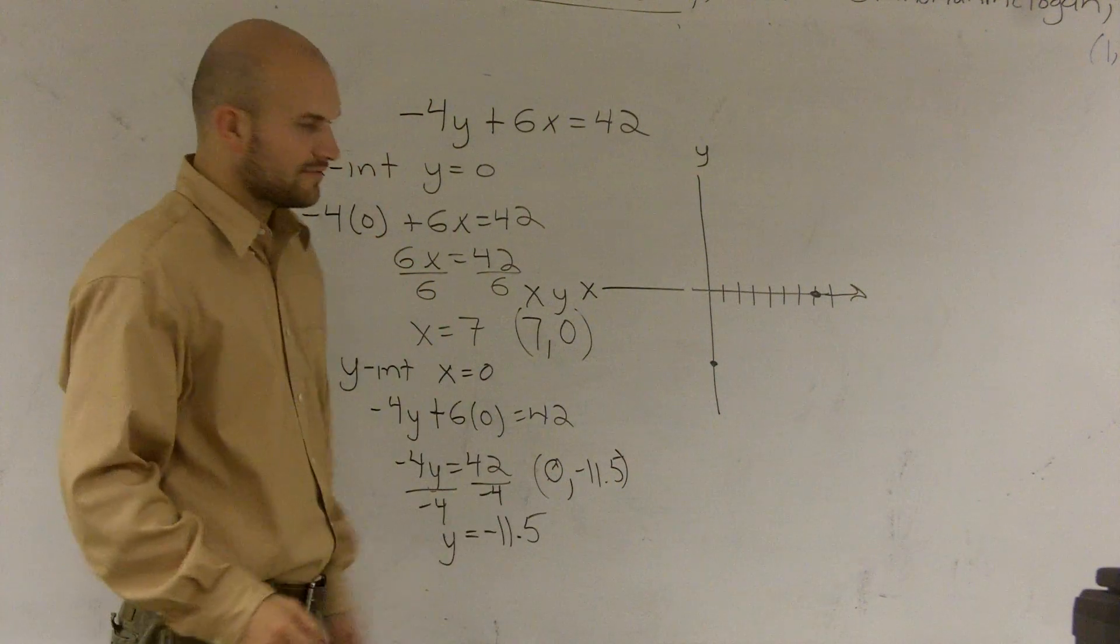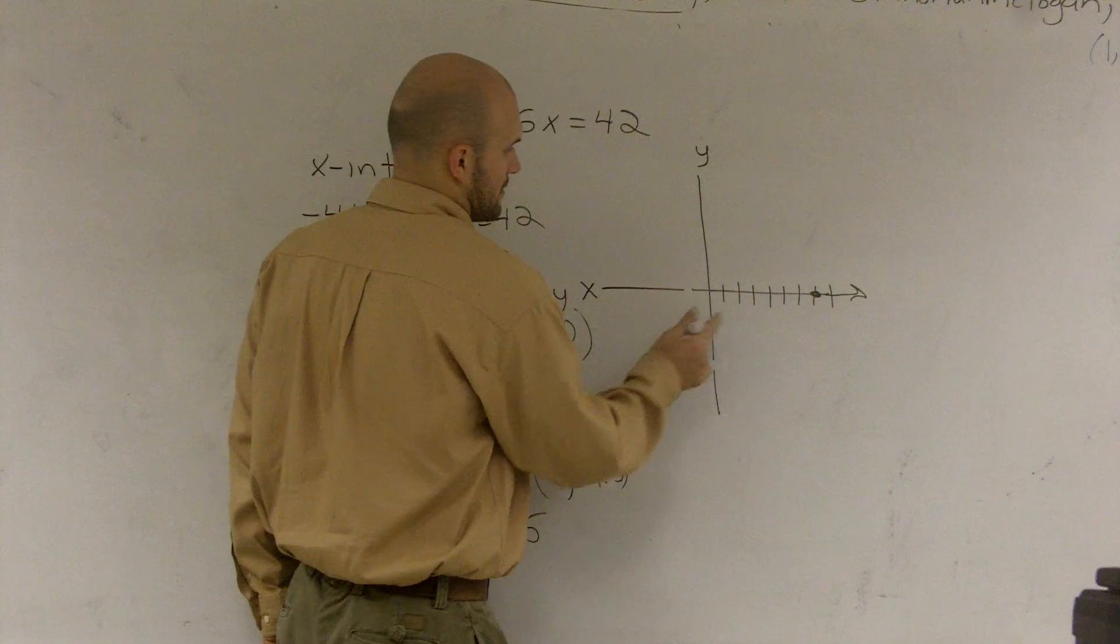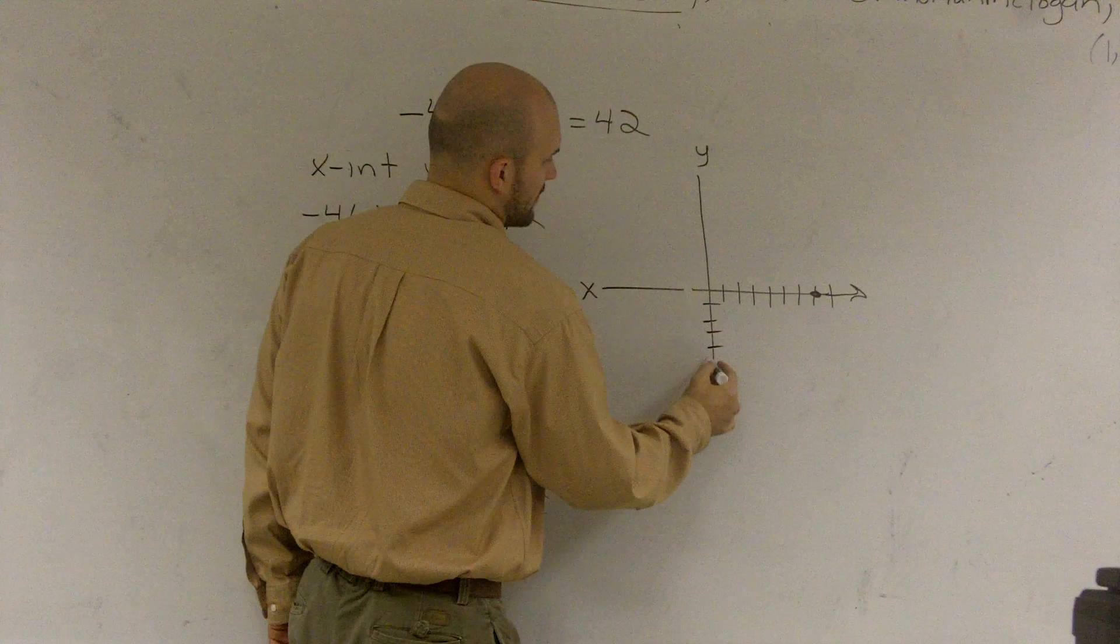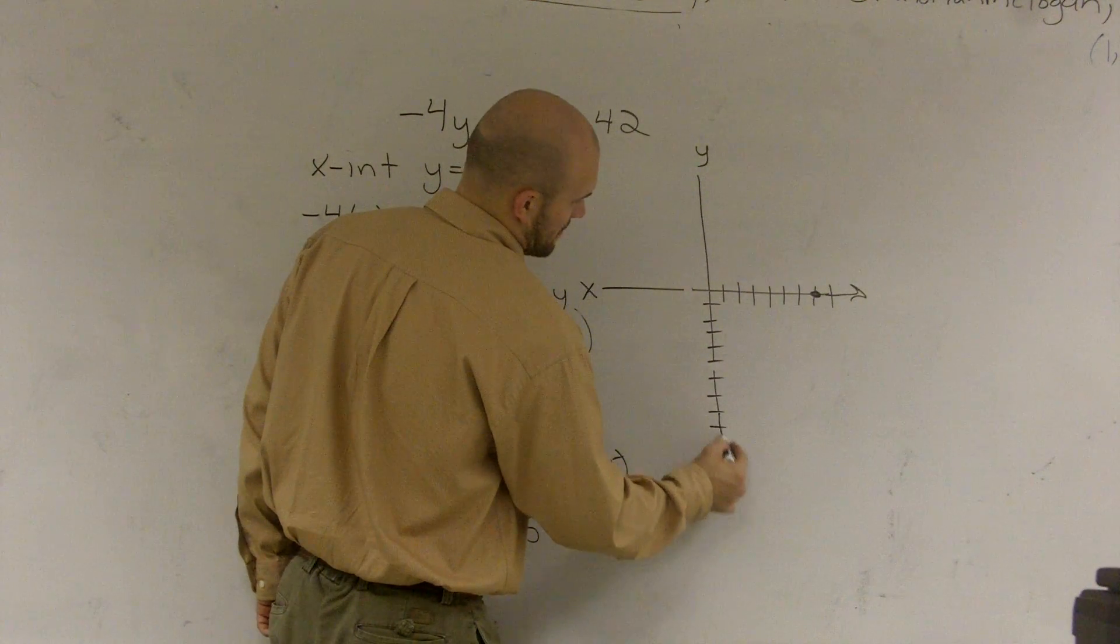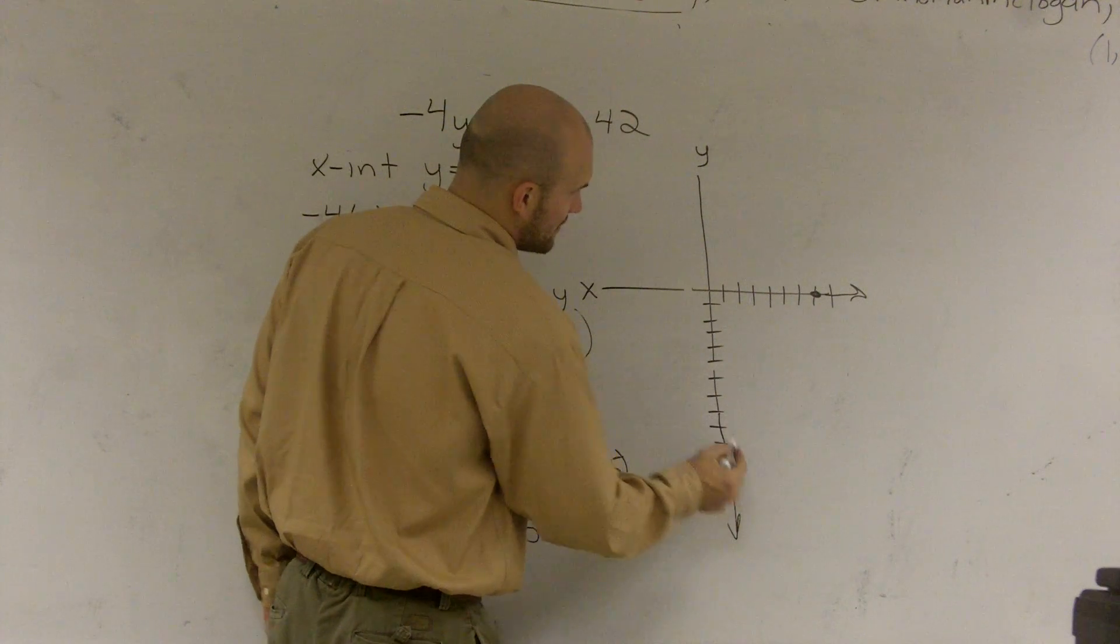So I just go down a negative 11 on my y-axis. 1, 2, 3, 4, 5, 6, 7, 8, 9, 10, 11, 12. So 11.5 would be right between.